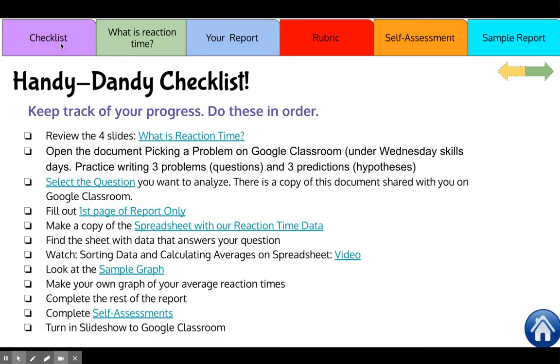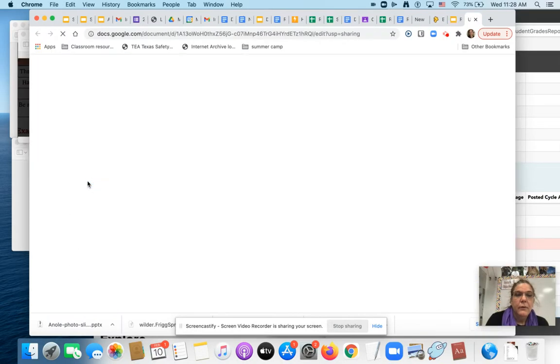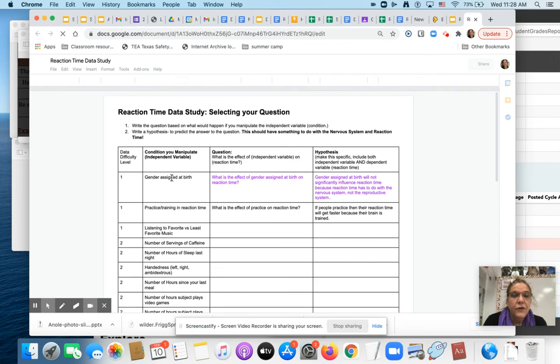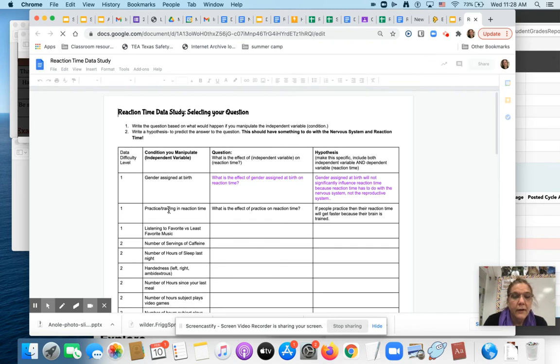So on Google Classroom, you were given under the Wednesday Skills Days a list of independent variables that we studied. So you're going to go to there. This is what it looks like. It has a whole bunch of data that we collected. Gender assigned at birth, practice, listening to favorite music, least favorite music,